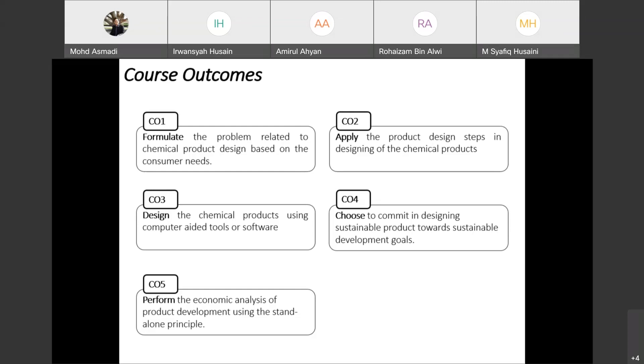Kemudian design the chemical product using the computer tools. Yang ni saya akan explain guna ICAS. I will give you the software and you have to install including the key, the license. CO4 and CO5 mostly on the project. So you have to work in teams. And then I think if you submit the test, you do your homework and also the project, you boleh pass. Jangan risau. Yang penting you will.